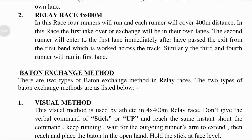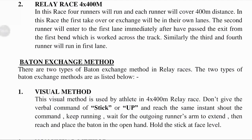Relay race 4x400 meter: the 4x400 meter relay is an athletics track event in which teams consist of four runners who each complete 400 meters or one lap. It is traditionally the final event of a track meet. The first runner proceeds in lanes for the first 100 meters, after which runners are allowed to break into the first lane on the back stretch, as long as they do not interfere with other runners.